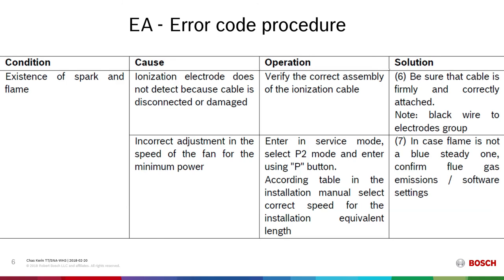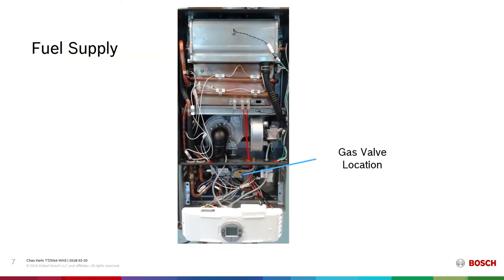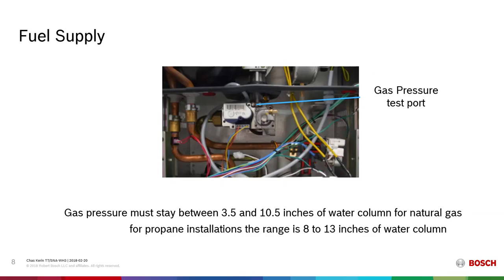A more obscure cause is improper setup for the low power on the fan. This is in-depth troubleshooting and we will not address that for this video. As we look at the fuel supply, note the location of the gas valve with the cover off the unit. The gas valve is supplying fuel. There are two ports on the gas valve on the top in the middle. The left-hand port is where we want to test the gas pressure. Gas pressures will be between 3.5 and 10.5 inches of water column for natural gas and 8 to 13 inches for propane. If the gas pressure rises above or falls below that range, there's an issue with the supply and that must be corrected.